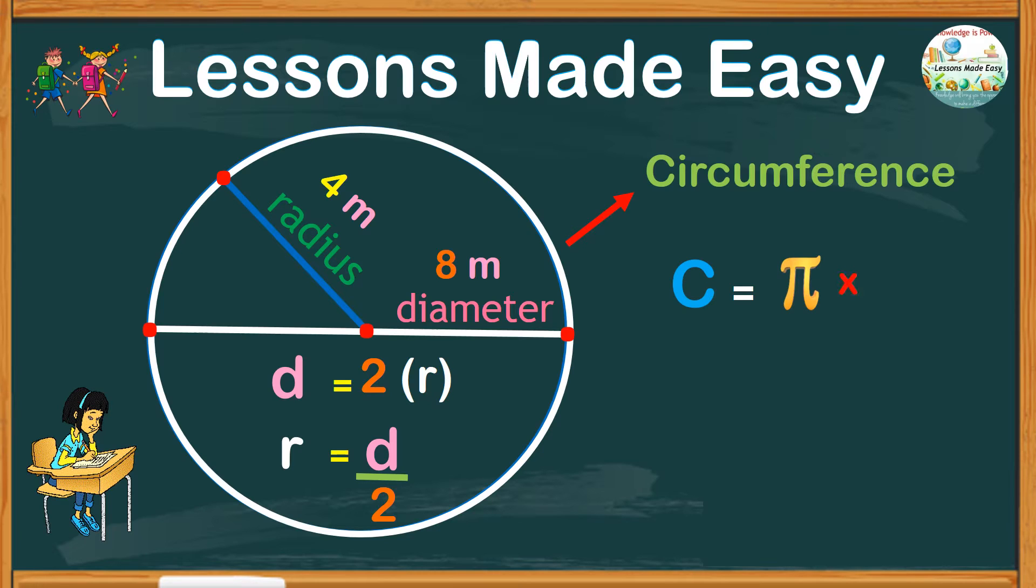However, to calculate the area we need pi times r squared. R squared means you multiply the quantity by itself.